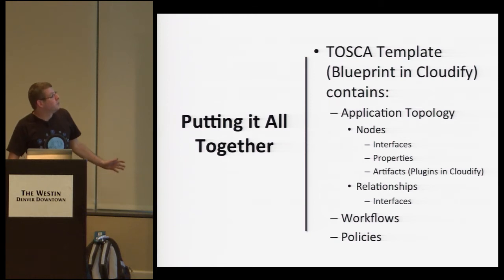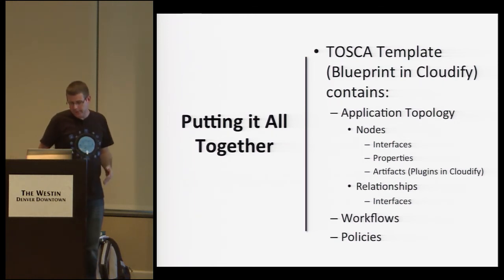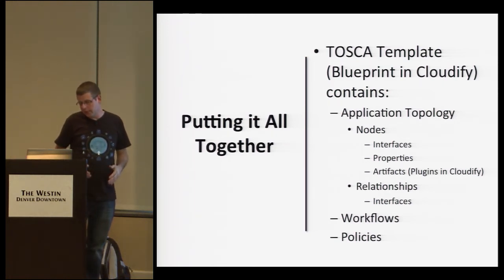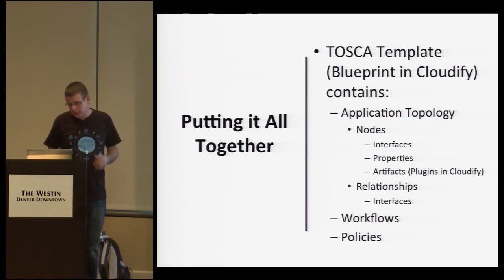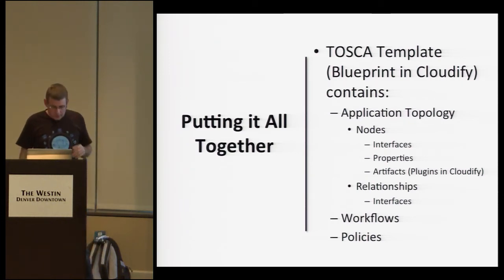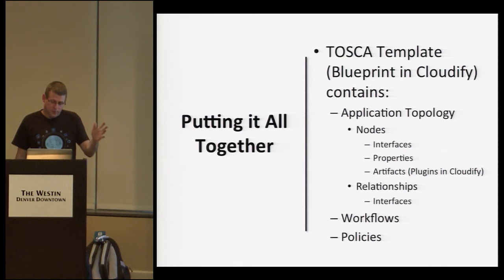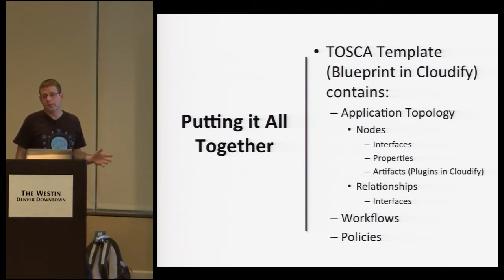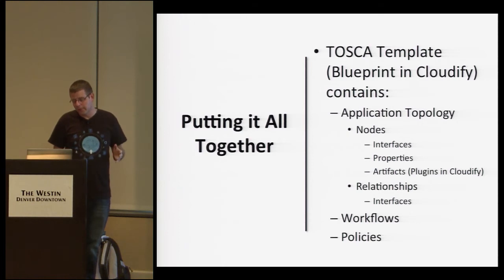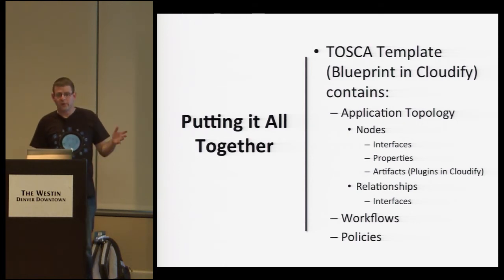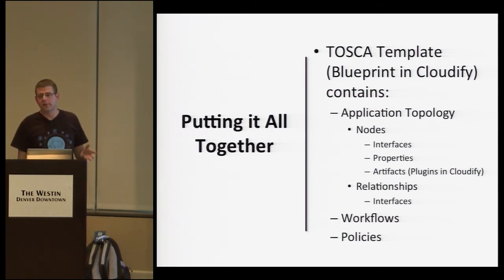Putting it all together, we've seen that the TOSCA template blueprint contains the application topology with all the properties I mentioned, any set of workflows for all your automation processes, and policies to ensure that your application is up and running and in good shape.